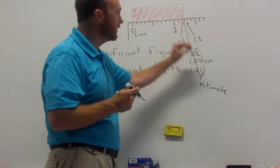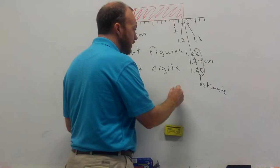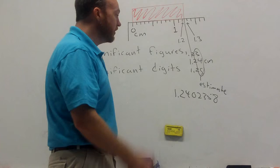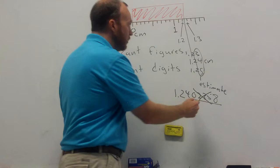Now, that number is significant. It's telling us something about the measurement. You cannot come read this measurement and tell me that it is 1.2402358. Your ruler is not that good. There is no way that you can read this. You made all that up.